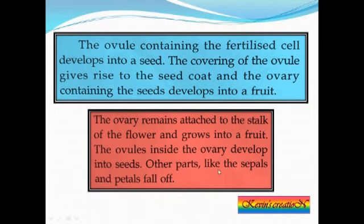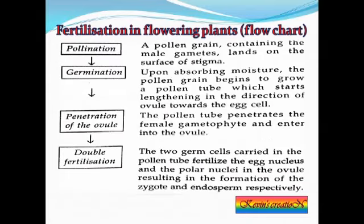After fertilization, other parts like sepals and petals fall off. Only the ovule and ovary remain — the ovule turns into the seed and the ovary develops into a fruit. A flowchart shows the process: the first step is pollination, which is the transfer of pollen grains from the anther to the stigma.